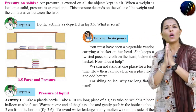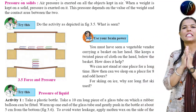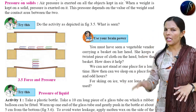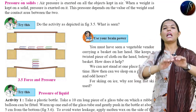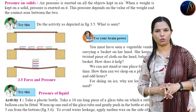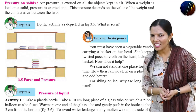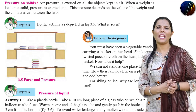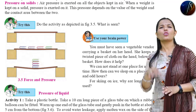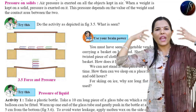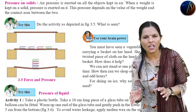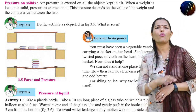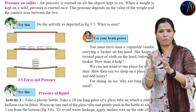One more question: we cannot stand at one place for a long time. How then can we sleep in one place for eight odd hours? When we stand, our weight acts on a relatively very small surface area, resulting in increased tension on the muscles of the leg, and therefore we cannot stand for eight hours in one place.